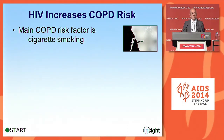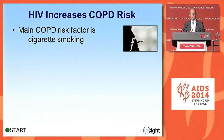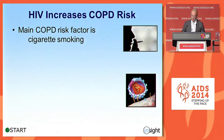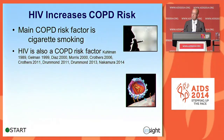The main risk factor for COPD still remains cigarette smoking. Other identified risk factors include exposure to biomass fuel smoke — using wood inside the home to heat or cook — and also alpha-1-antitrypsin deficiency, which is a genetic disorder most common in northern European populations. However, multiple observational studies have found that HIV is an independent risk factor for COPD, even in studies that have adjusted for the high prevalence of cigarette smoking in patients with HIV infection.